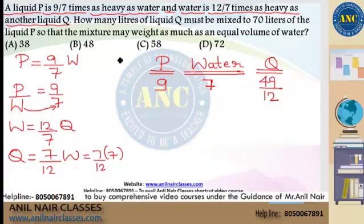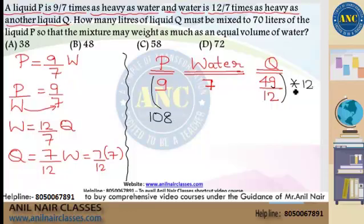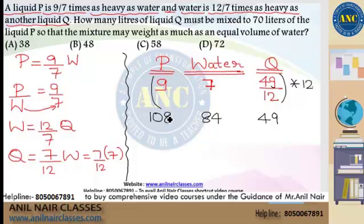I don't like solving with fractions, so I'll eliminate the denominator. Multiply the entire thing by 12: 12 into 9 is 108, 12 into 7 is 84, and 49/12 into 12 is 49. So if liquid P is 108 liters, water will be 84 liters, and liquid Q will be 49 liters.